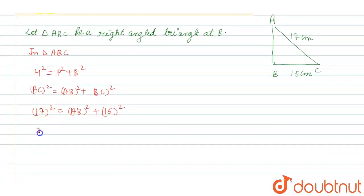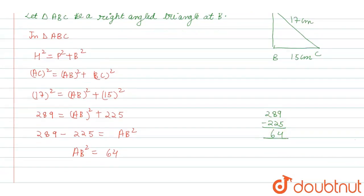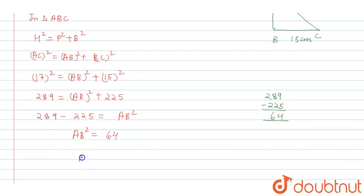17 squared is 289 equals AB² plus 15 squared is 225. Now 289 minus 225 equals AB². So AB² equals 64. When we subtract 225 from 289, we get 9 minus 5 is 4, 8 minus 2 is 6, so we get 64.